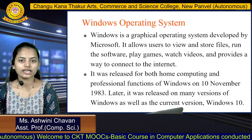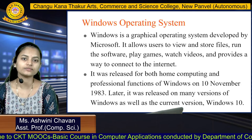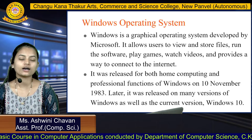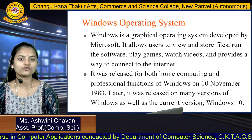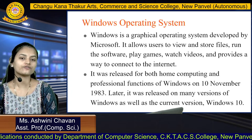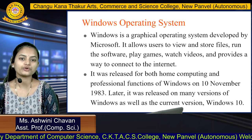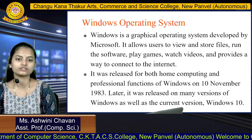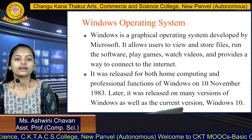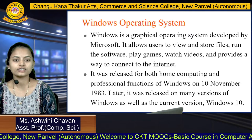Next we will see some types of operating system. The first is the Windows operating system. Windows is a graphical operating system developed by Microsoft. It allows users to view and store files, run software, play games, watch videos, and provides a way to connect to the internet. It was released for both home computing and professional functions on 10th November 1983, and later released in many versions, with the current version being Windows 10.